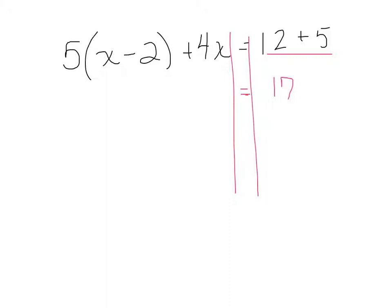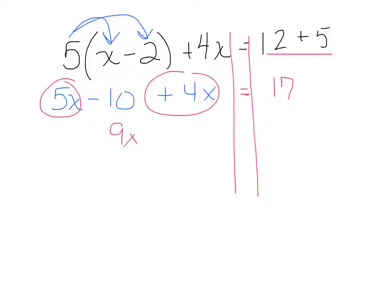On the left-hand side, before I can do anything else, I need to distribute first. So 5 times x is 5x. 5 times 2 is 10 plus then 4x. So then my next step will be to combine like terms. I get 5x plus 4x is 9x. I keep the minus 10 is equal to 17.